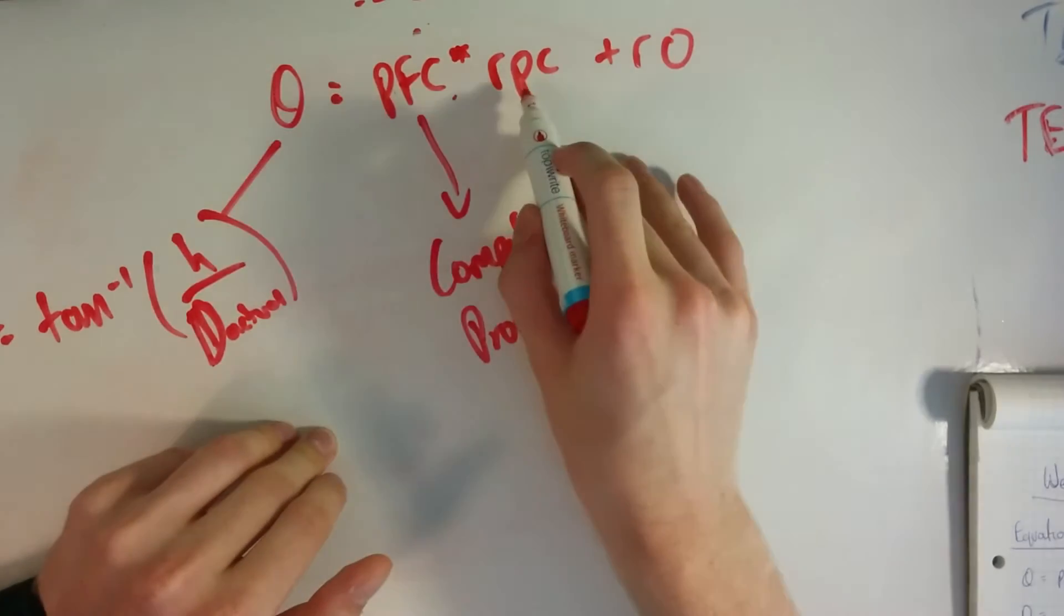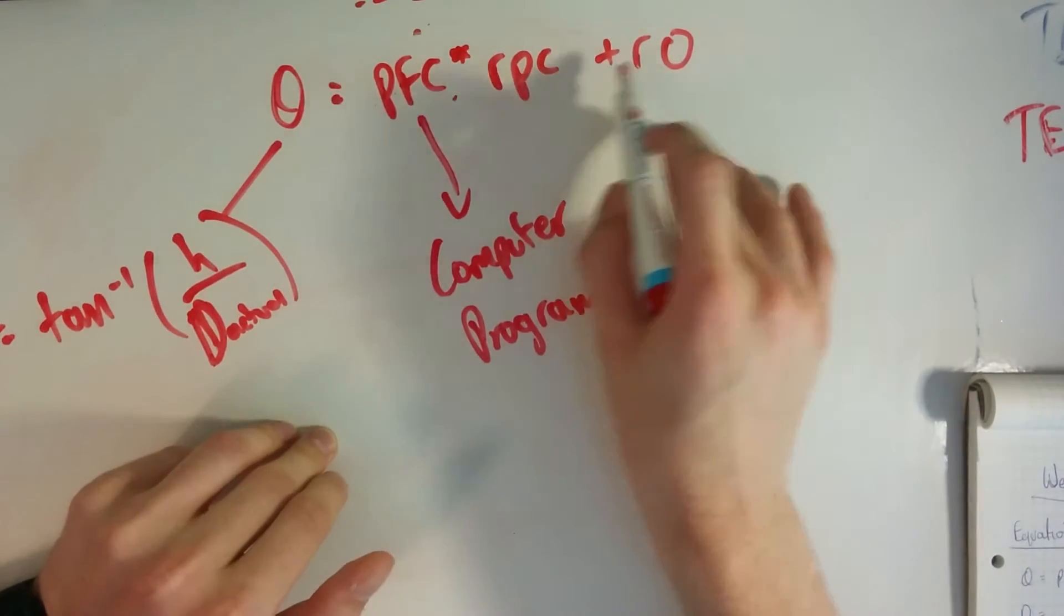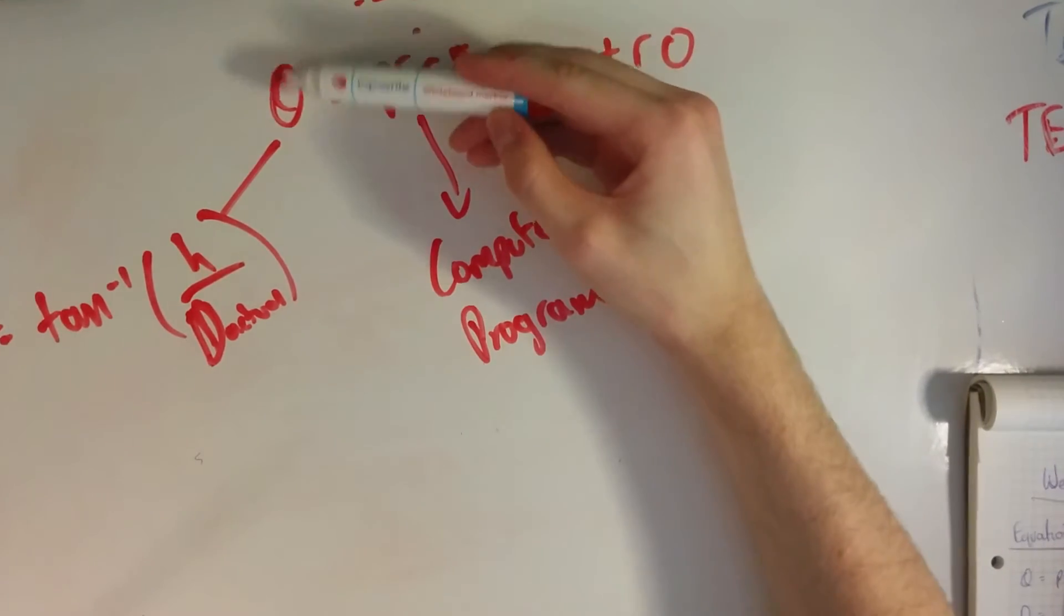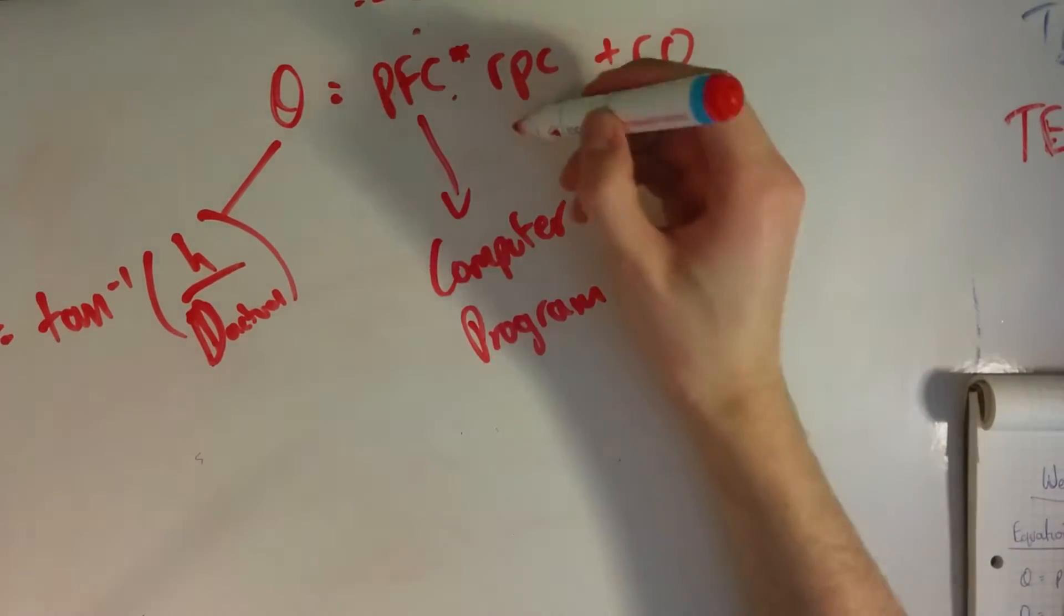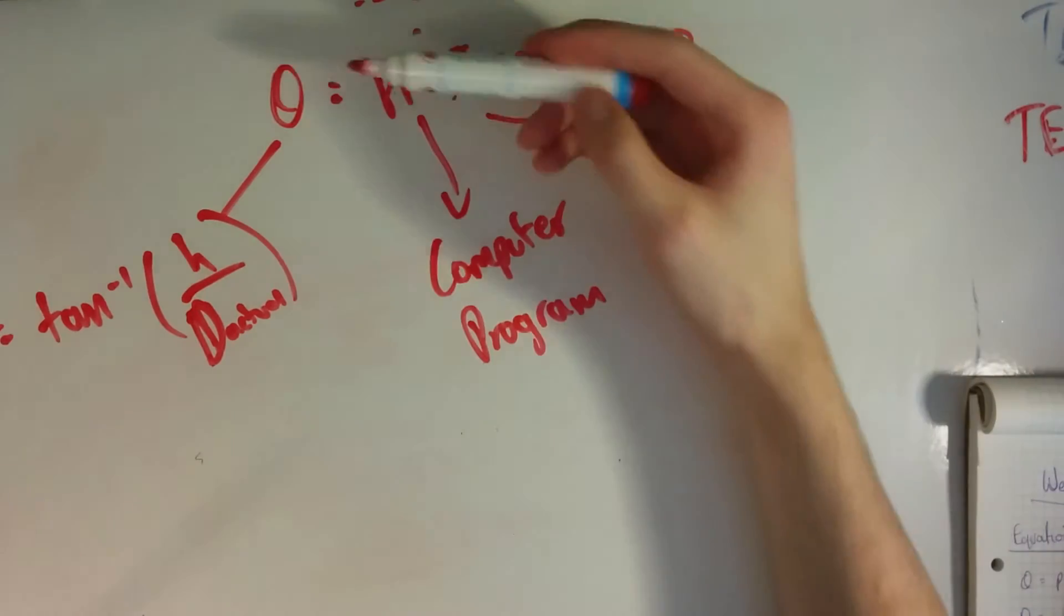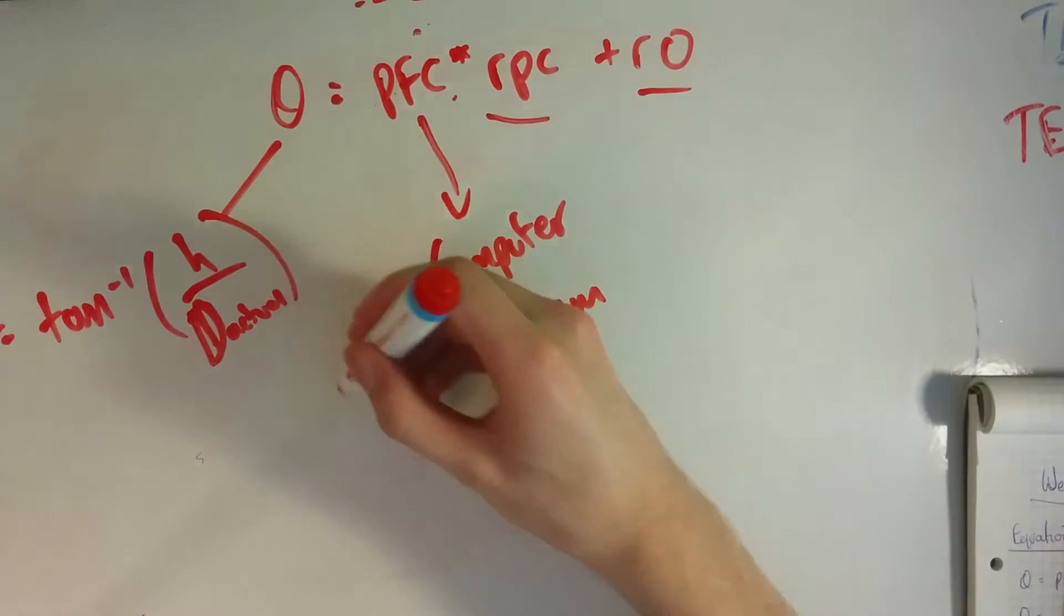If you can imagine y equals mx, or I guess this would be your m, y equals mx plus c. So we have this equation of the line, and we can have these two values that we measured. What we're looking for is rpc and r0. Because this is the equation of a line, we can plot theta and pfc, we'll get a line, get the equation of that line.